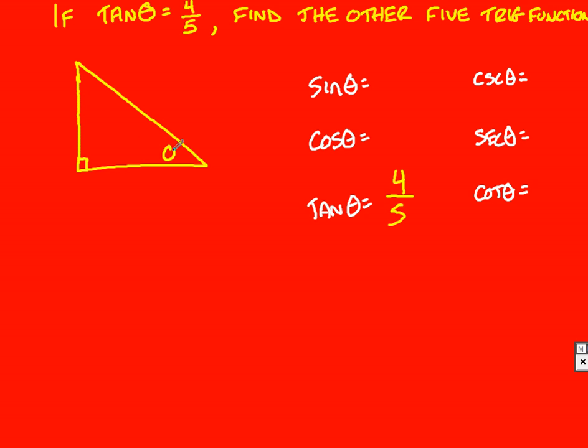Pick one of your non-right angles and call it theta. If tangent of theta is 4 over 5, how can I draw a triangle? I can make my opposite be 4, my adjacent be 5, that way I have 4 over 5 for tangent of theta.